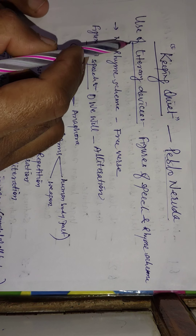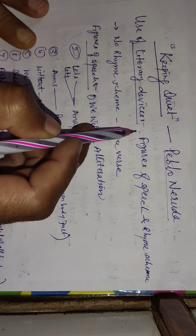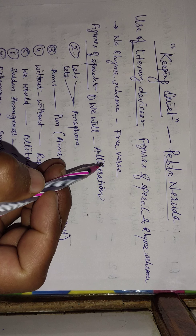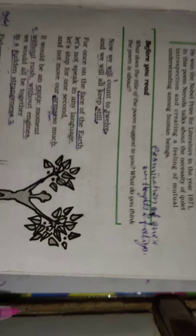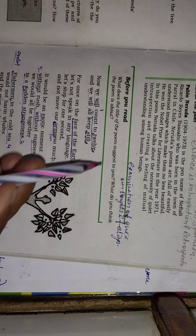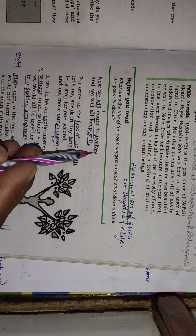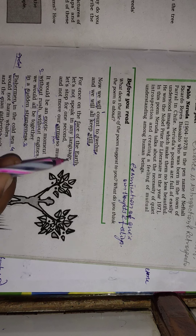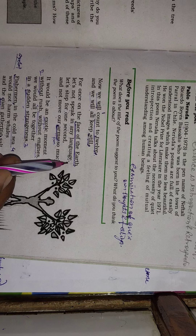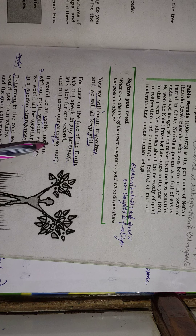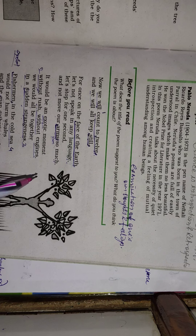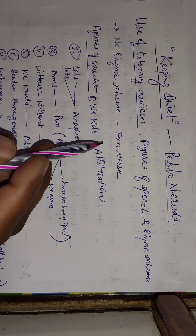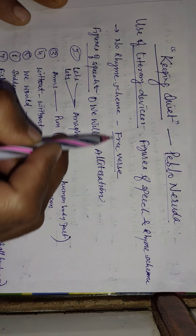The rhyme scheme of this poem does not exist at all — there is no rhyme scheme. If you go through the poem, you won't find any rhyme scheme. This poem has been composed in free verse. When there is no rhyme scheme, the term used for that is free verse.